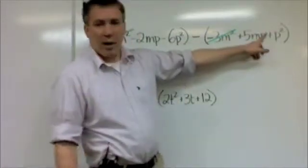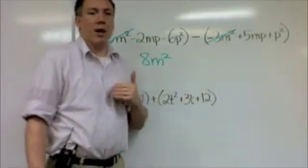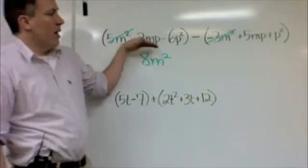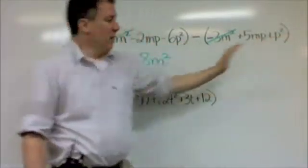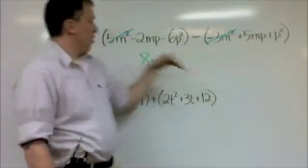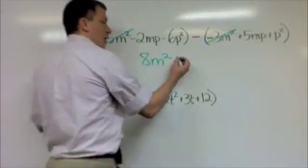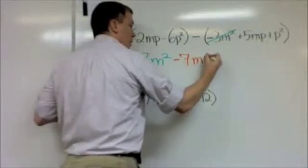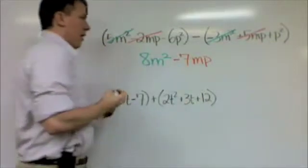So mp, mp, that's okay. If there was like a squared on the p or the m here, I could not do this. It would not be like terms. So minus 2mp's here. Minus, because this minus applies to everything over here, subtracting the whole thing, minus this. So now minus 2, minus 5 is minus 7mp. So I've taken care of these two.